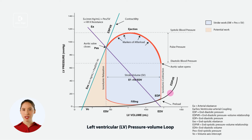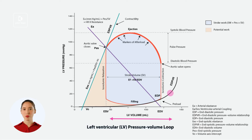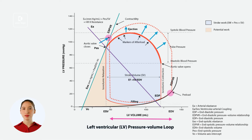When preload increases, we see a rightward shift in the EDV point on the pressure volume loop. This leads to a larger stroke volume, which in turn causes an increase in ventricular pressure during systole and at end of systole. The pressure volume loop becomes wider, indicating an increased stroke volume and stroke work of the heart.